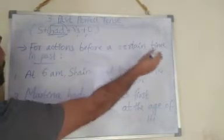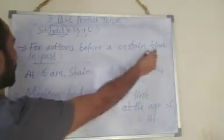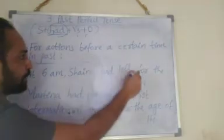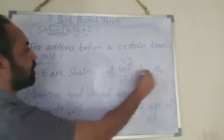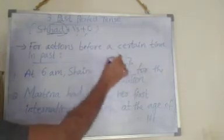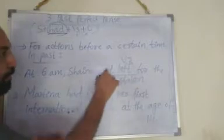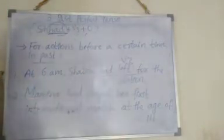Next, we can use this tense for actions before a certain time in the past. Example: 'At 6 am, China had left for the station.' 'Had left' — had plus V3 form — so this is past perfect tense. The action happened before a certain time in the past, that is before 6 am. So here we have to use past perfect tense.